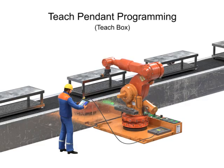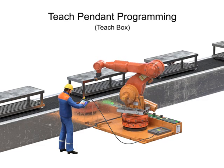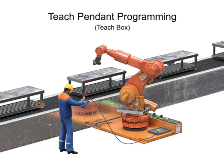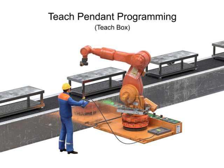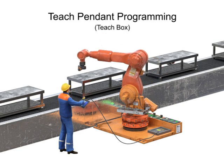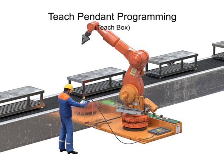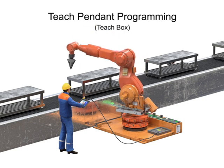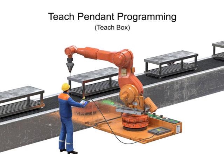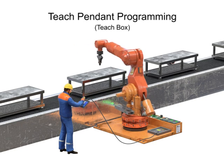Teach pendant programming is a method by which the operator steps the robot through the program point by point while recording the coordinates for each point. The technician has the ability to send the robot to a desired position, inch, or jog to adjust it and then record the point.